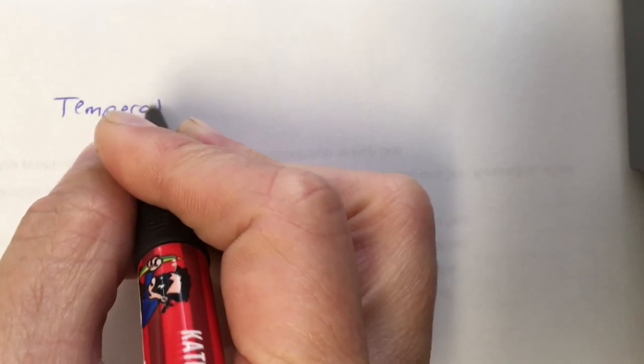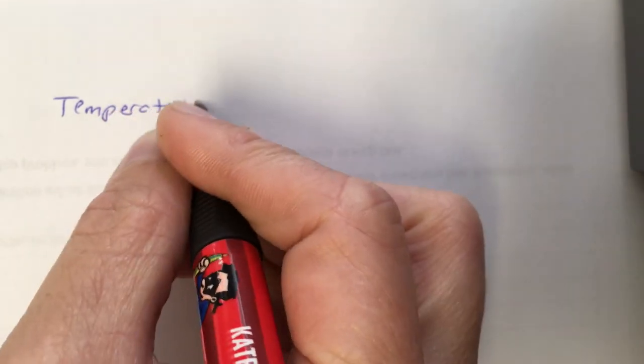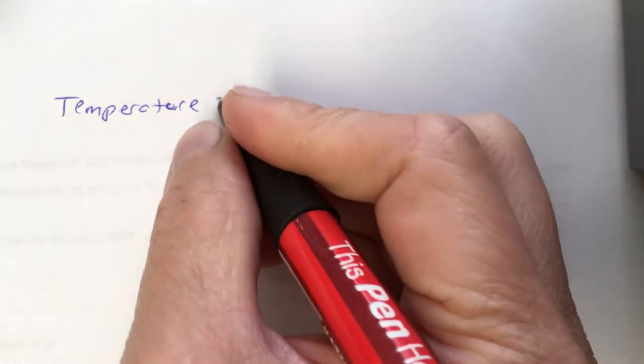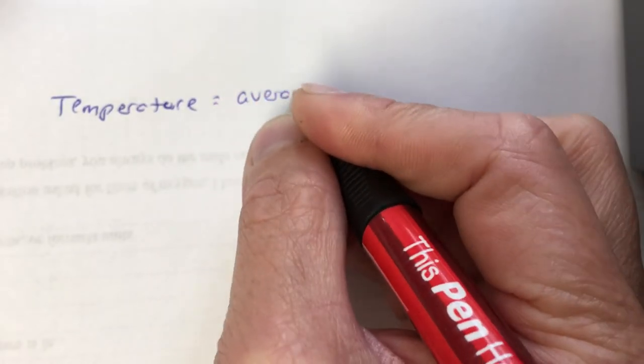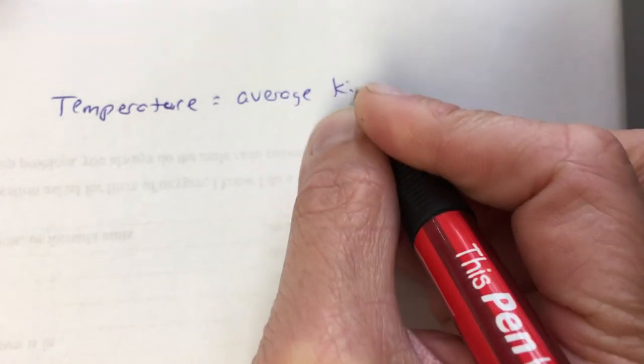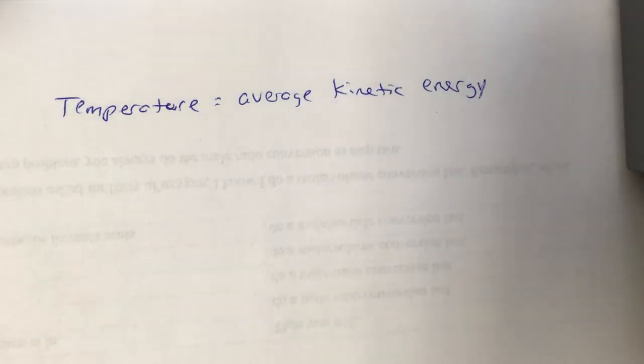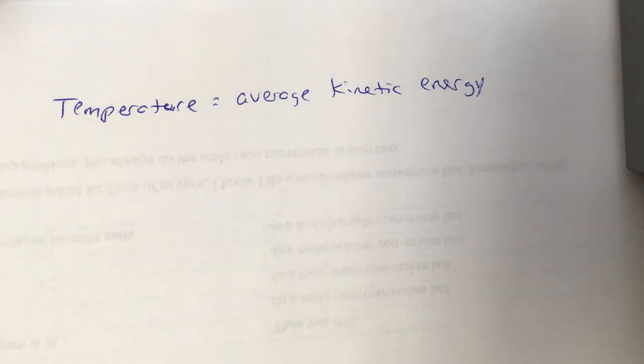Third thing that we see often is temperature. Temperature is the relative measurement of average kinetic energy. We say relative measurement of average kinetic energy because it really does differ from one substance to the next. But it's an indication anyways of how fast or slow the particles are moving. High temperature means fast, low temperature means slow.